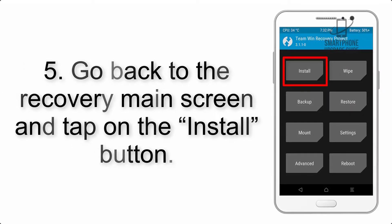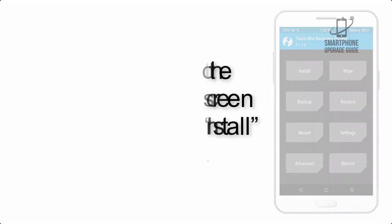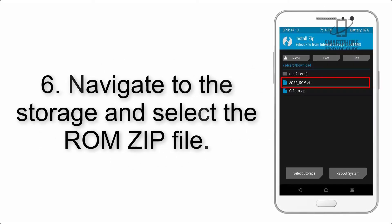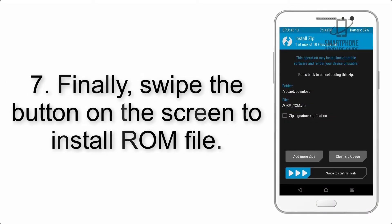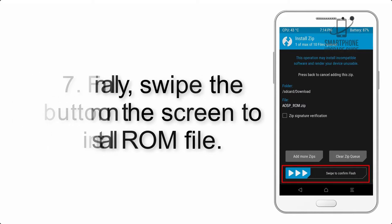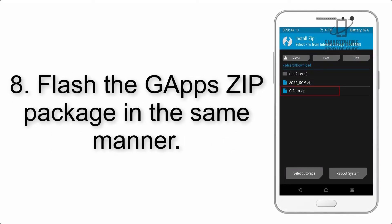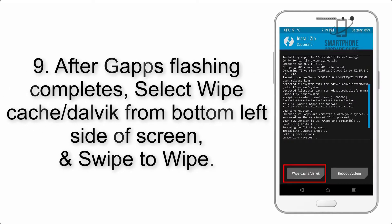Step 4: Swipe the button to wipe the device. Step 5: Go back to the recovery main screen and tap on the Install button. Step 6: Navigate to the storage and select the ROM zip file. Step 7: Finally, swipe the button on the screen to install the ROM file.